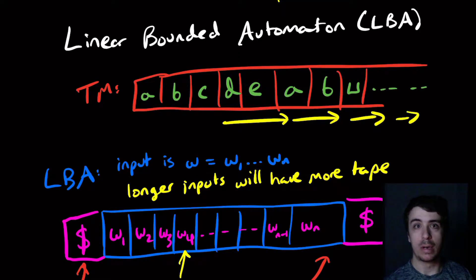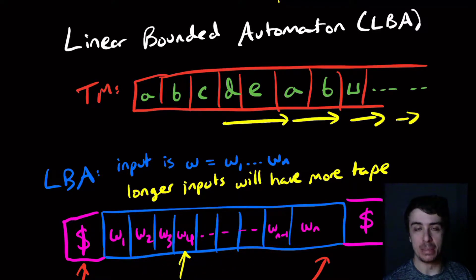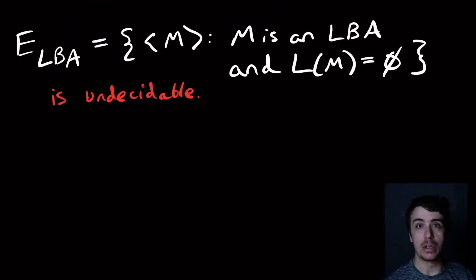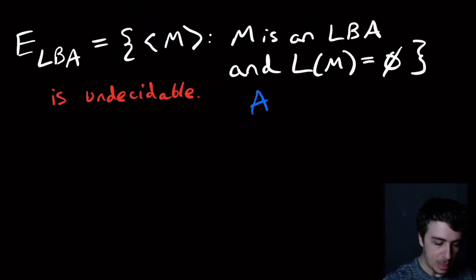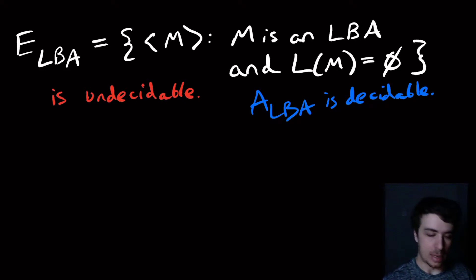Today we'll be doing a proof regarding LBAs — linear bounded automata — which are Turing machines with two endpoints where the tape is exactly the input. If you give a longer input, you get more tape. The problem we're interested in is called the E_LBA problem: given an LBA, does it accept nothing? We saw that the A_LBA problem is decidable because we can simulate the LBA for a bounded time and detect infinite loops, since it can't acquire more memory. The emptiness problem, however, is undecidable.